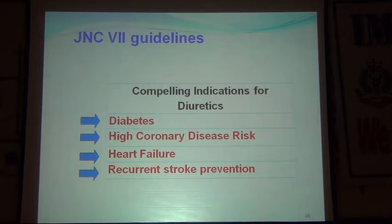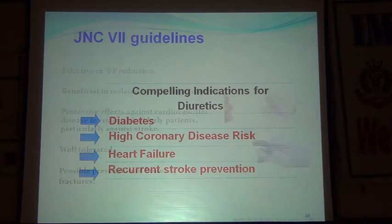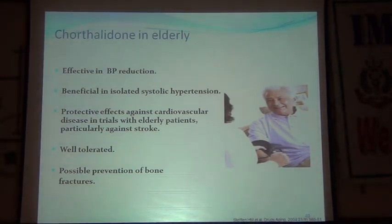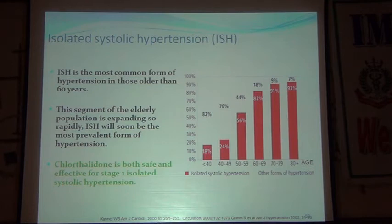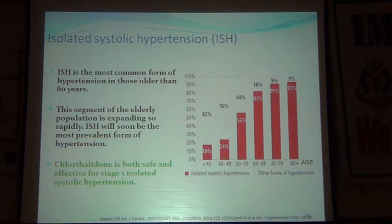Compelling indications for diuretics include diabetes, high coronary artery disease risk, heart failure, and recurrent stroke prevention. For elderly patients, chlorthalidone is particularly useful because isolated systolic hypertension is more common in the elderly. It is well tolerated and increases calcium levels, offering possible prevention of bone fractures. As age advances, isolated systolic hypertension increases, making chlorthalidone both safe and effective for Stage 1 isolated systolic hypertension.